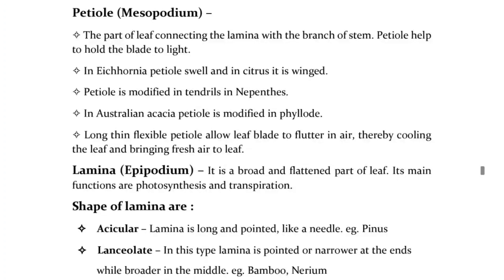The petiole (mesopodium) is the part of the leaf connecting the lamina with the branch or stem. The petiole helps to hold the blade to light. In Eichhornia, the petiole swells, and in Citrus it is winged. The petiole is modified into tendrils in Nepenthes, and in Australian Acacia the petiole is modified into a phyllode. A long, thin, flexible petiole allows the leaf blade to flutter in air, thereby cooling the leaf and bringing fresh air to it.